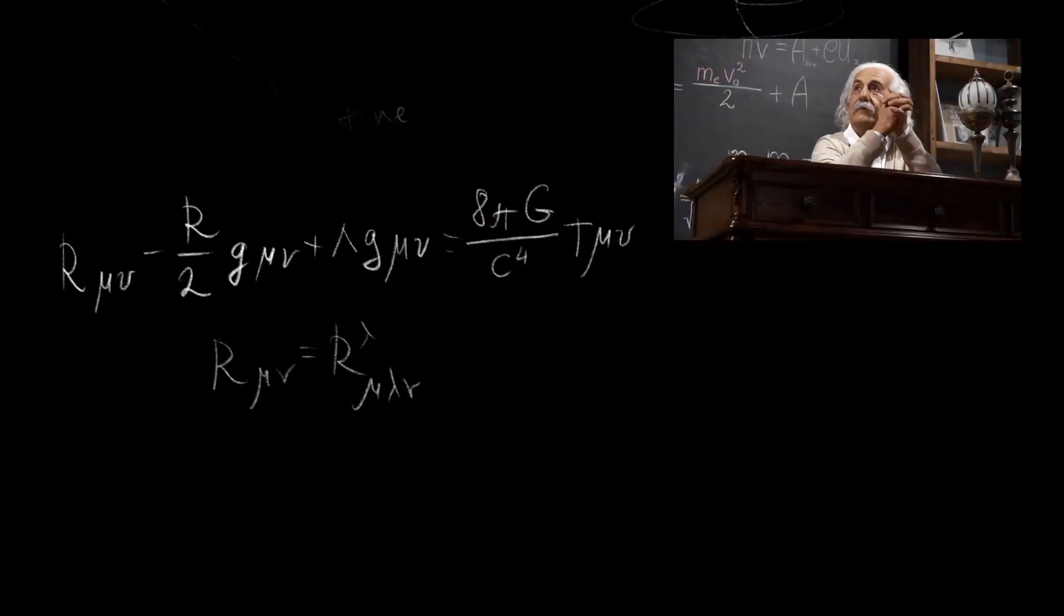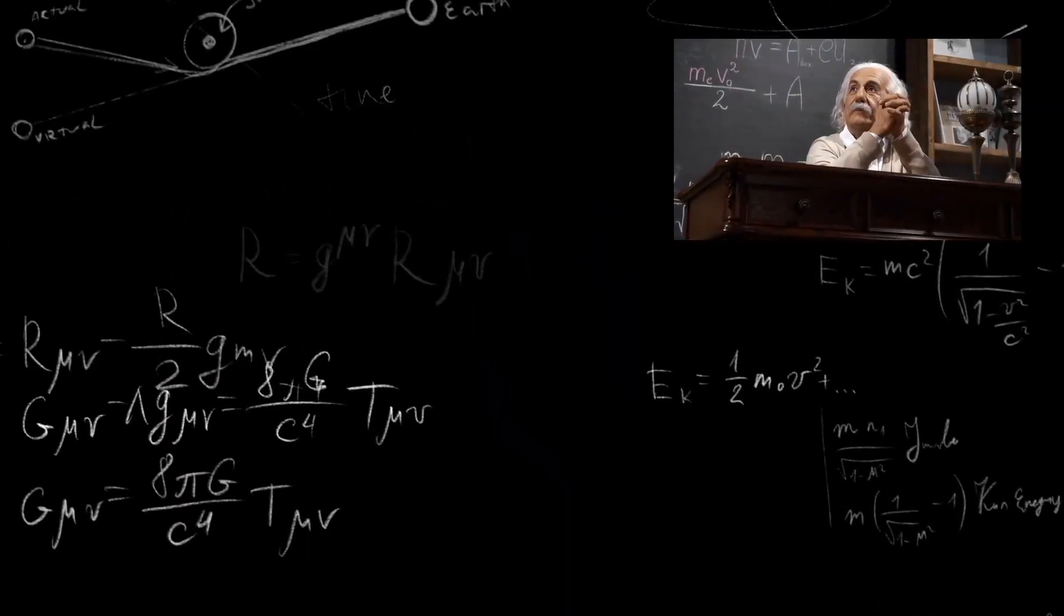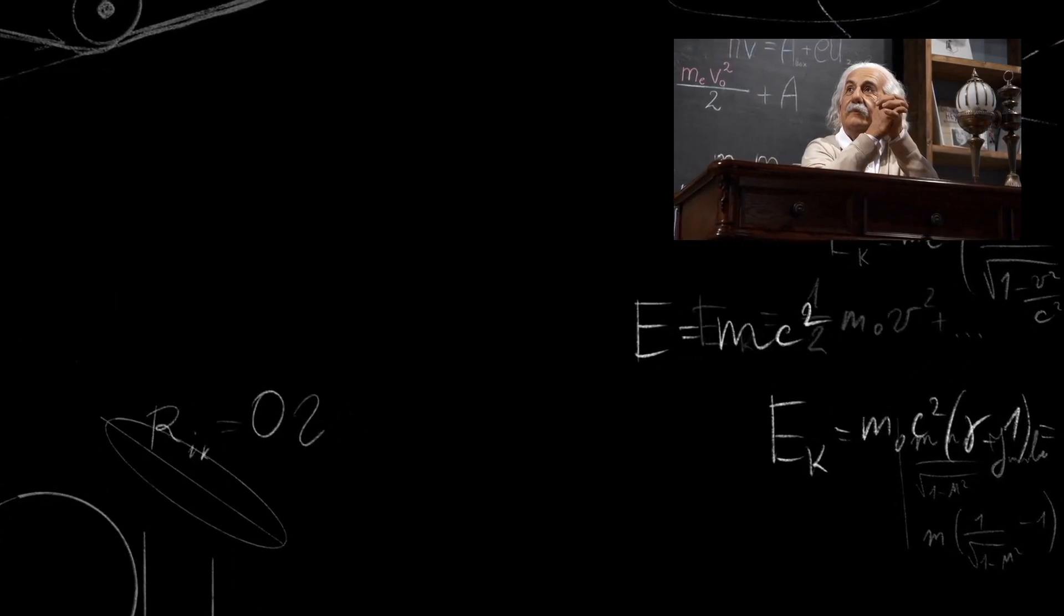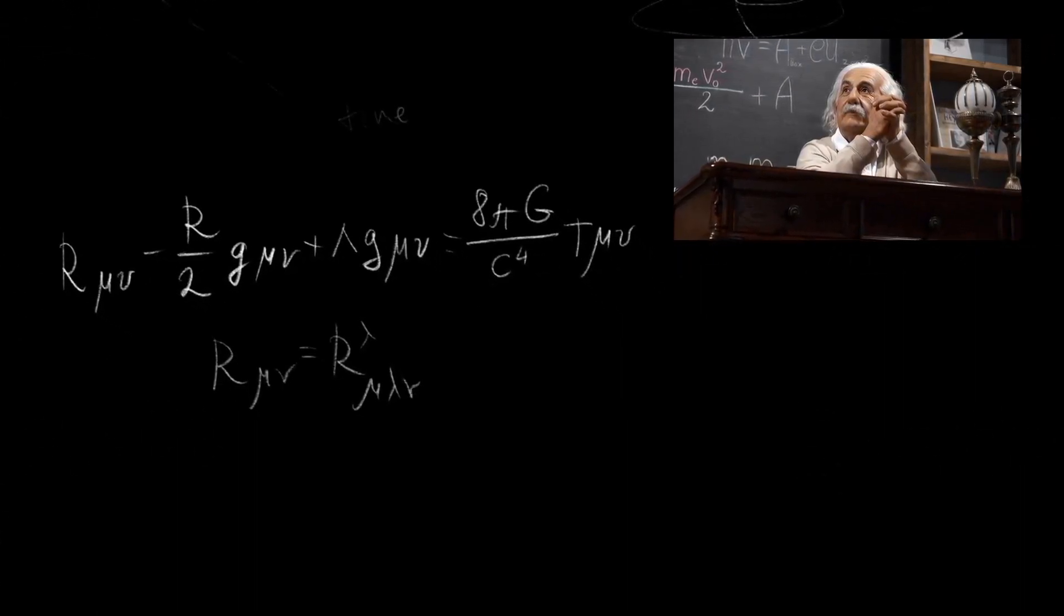The Royal Astronomical Society finally recognized Einstein's theory of general relativity on November 6, 1919.